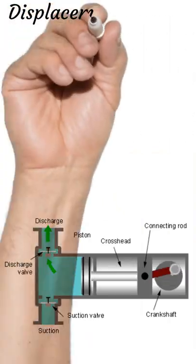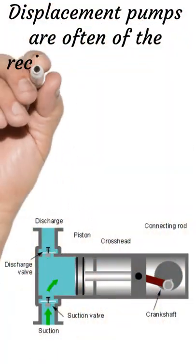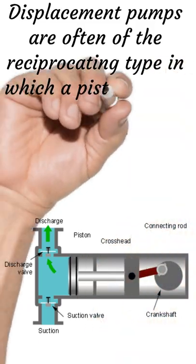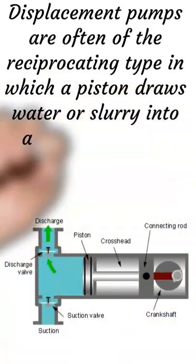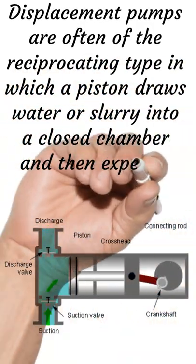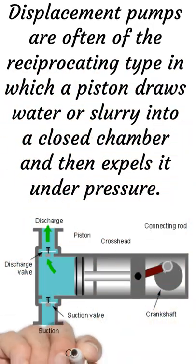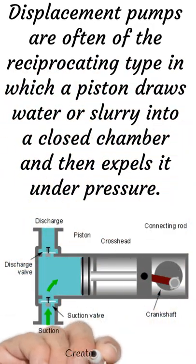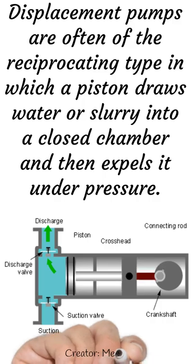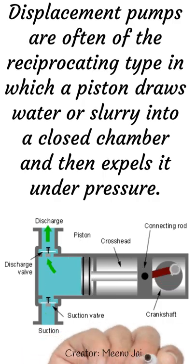Positive displacement pumps are often of the reciprocating type, in which a piston draws water or slurry into a closed chamber and then expels it under pressure.